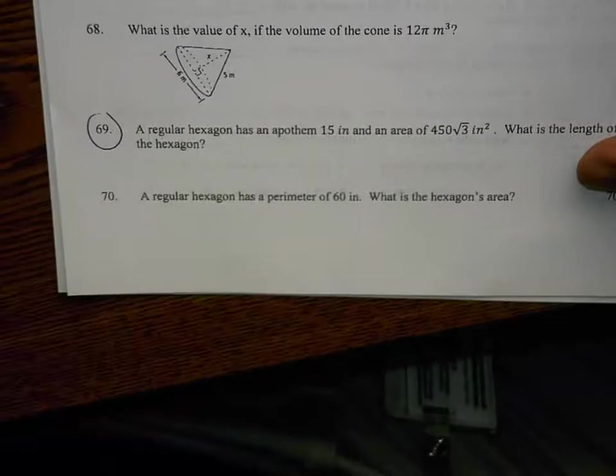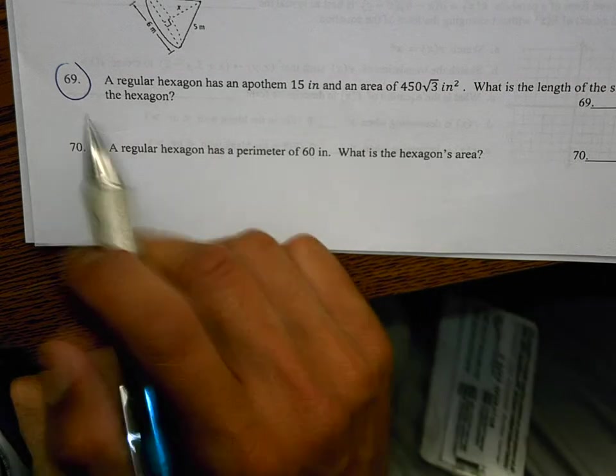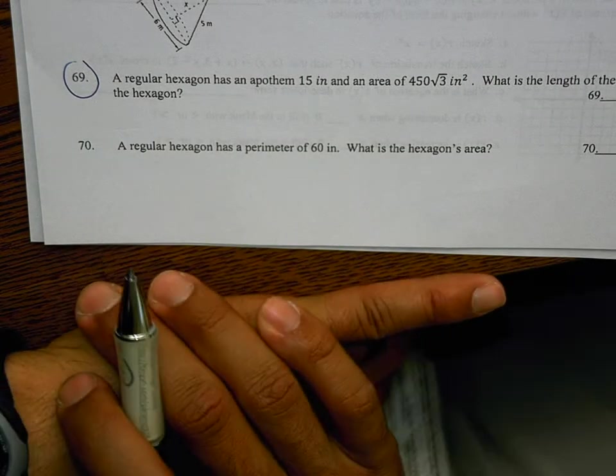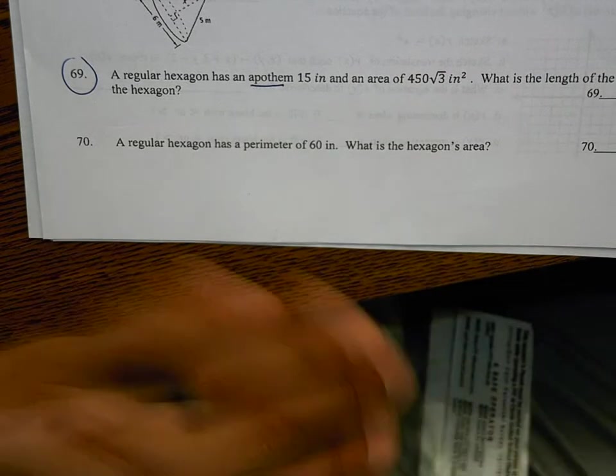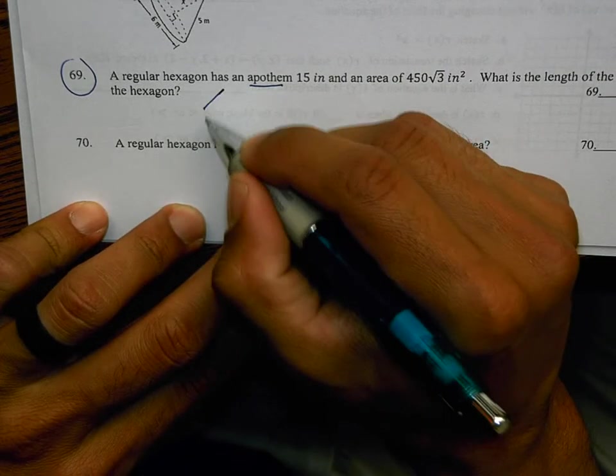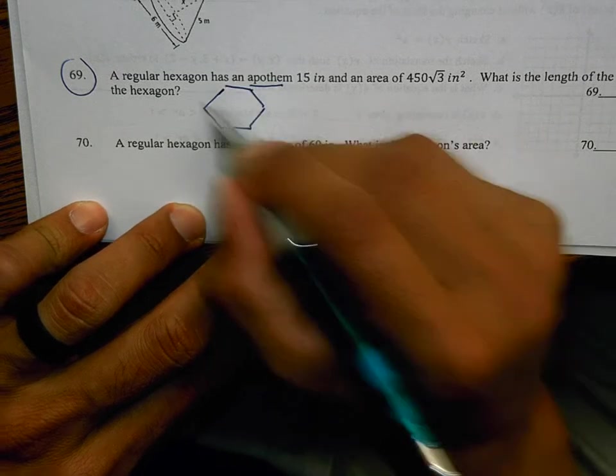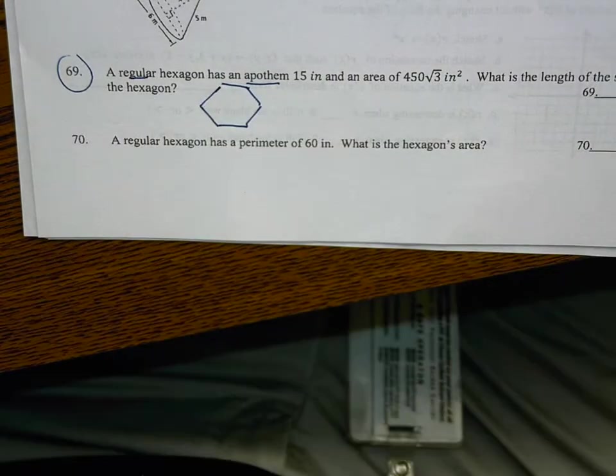Last example that I have for you is this one here. A regular hexagon, because I don't know if you remember the word apothem. I wanted to review that with you. A regular hexagon has an apothem. Hexagon has six sides and it's regular, so it means all the sides are the same length.